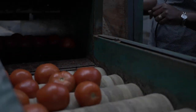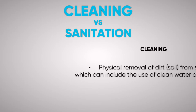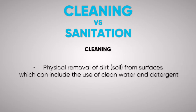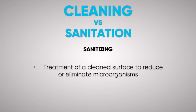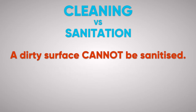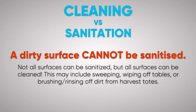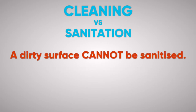Let's take a brief overview of cleaning and sanitization — what is the difference and why does it matter? Cleaning is the physical removal of dirt or soil from surfaces, which can include the use of clean water and detergent. Sanitizing is treatment of a cleaned surface to reduce or eliminate microorganisms. A dirty surface cannot be sanitized. Not all surfaces can be sanitized, but all surfaces can be cleaned — this may include sweeping, wiping off tables, or brushing or rinsing off dirt from harvest totes. Cleaning must be done before sanitizing. Surfaces may be cleaned with a detergent, and a sanitizer or another treatment can then be applied to reduce or eliminate pathogens and spoilage microorganisms.